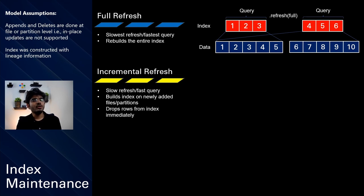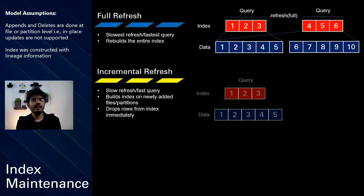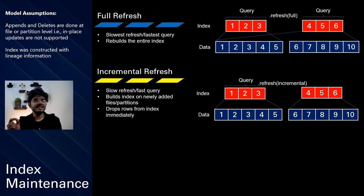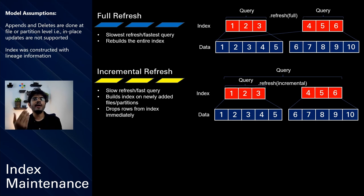The second mode of refresh is called incremental refresh. It is slightly slower to perform but allows for a reasonably fast query mechanism, because it builds the index only on the newly added files and partitions. When you get a query, it uses the existing version of the index. When you add new dataset blocks and call incremental refresh, Hyperspace builds new index versions only on top of the newly added data, and the next query uses the combination of both sets of index blocks.